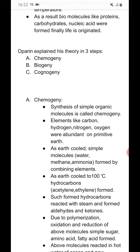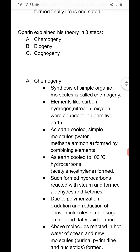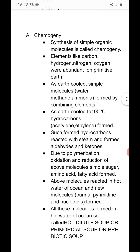Chemogeny: synthesis of simple organic molecules is called chemogeny. Elements like carbon, hydrogen, nitrogen, and oxygen were abundant on primitive earth. As earth cooled, simple molecules like water, methane, and ammonia formed by combining elements. As earth cooled to 100 degrees Celsius, hydrocarbons like acetylene and ethylene were formed.